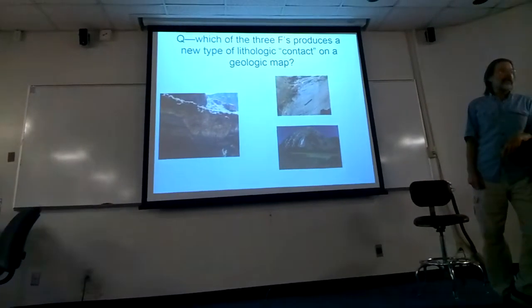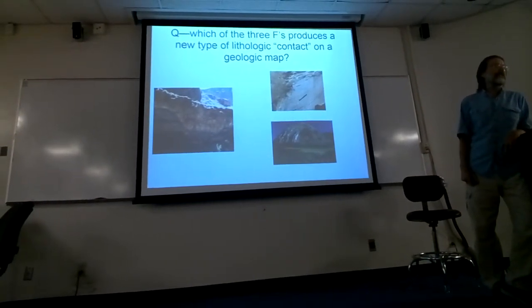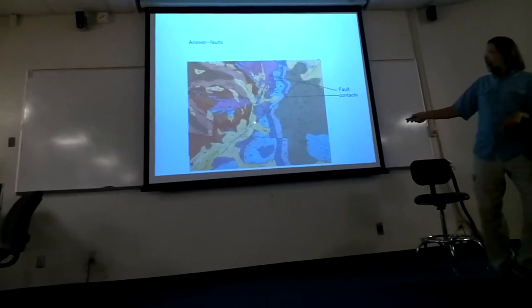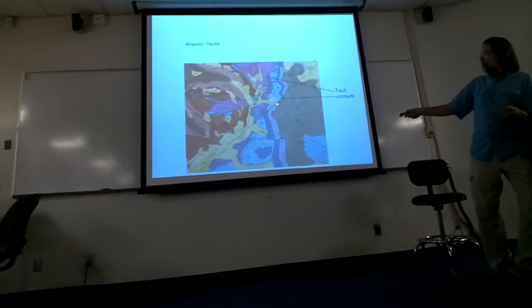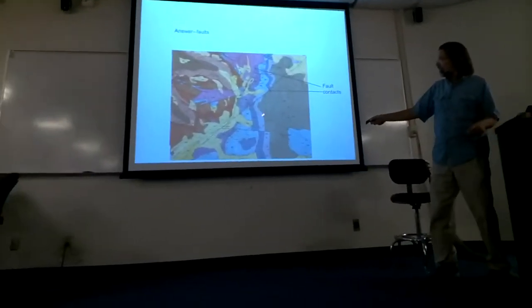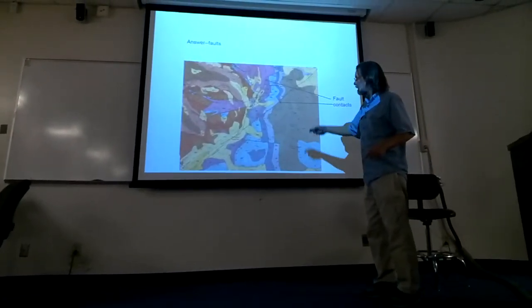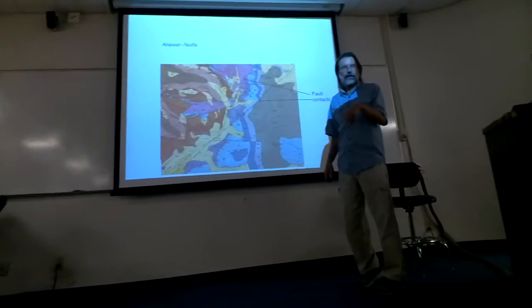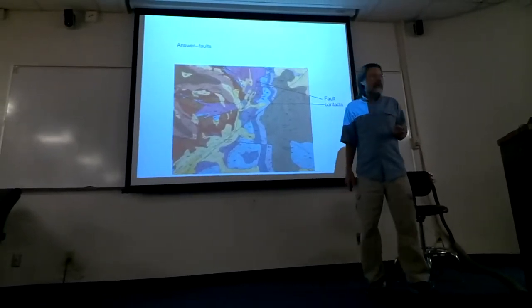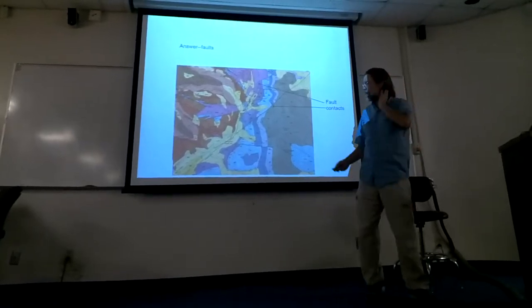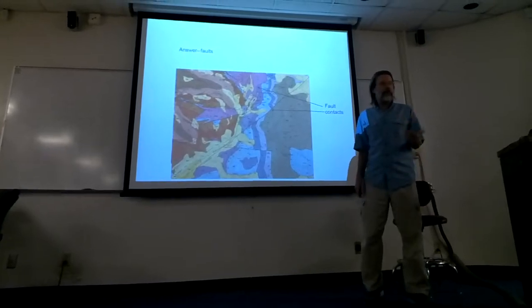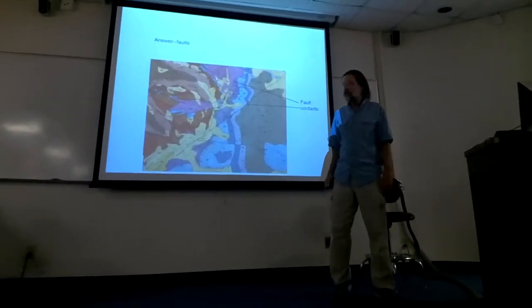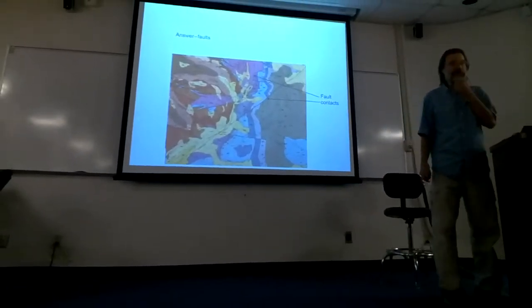Which of those three produces a fourth type of lithologic contact on a geologic map? Faults — correct. Just like in the field example, units come up to faults and get truncated. The other depositional contacts come up to the fault and get truncated, making a new lithologic contact that separates one rock body from another. That's a very conspicuous thing that can be recognized on any geologic map. Faults are always shown on a traditional geologic map as heavy black lines — about twice the line weight of the standard depositional or unconformity contact.